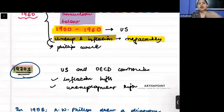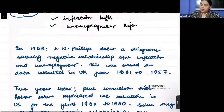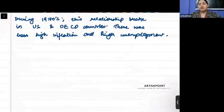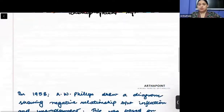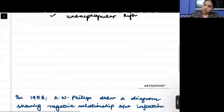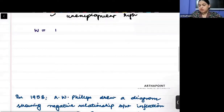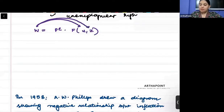Now we want to understand what inflation is and how we can draw this relationship. If you remember, we did two relations: one was called the price-setting relation and the other was known as the wage-setting relation. The wage-setting relation is W = PE · F(U, Z), meaning wage depends negatively on unemployment, positively on factor Z, and positively on expected prices.